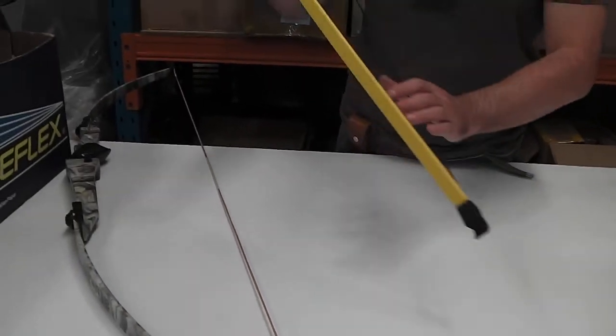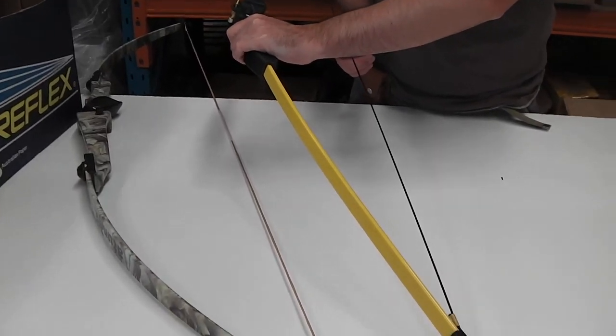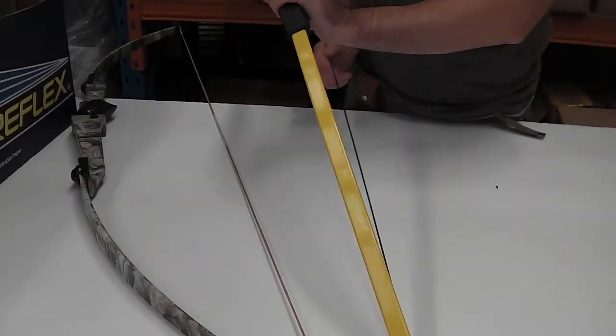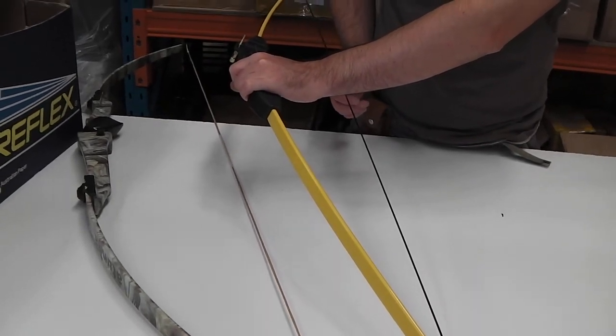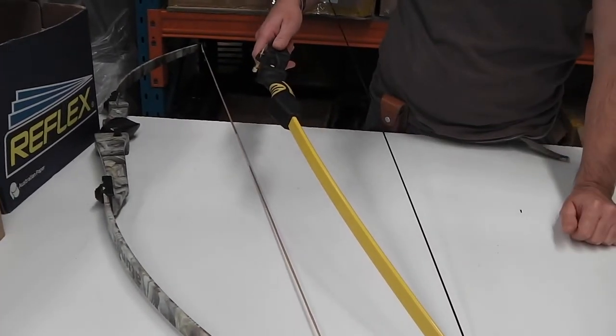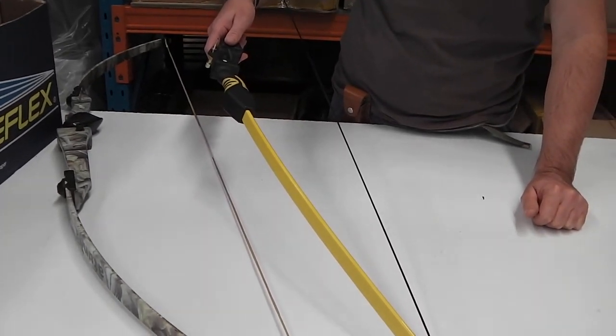This first one here is our kids' version, the 15-pound recurve bow. It's set at 15 pounds and can't be adjusted because it's a longbow. It's perfect for kids probably around the ages of 6 to 10.